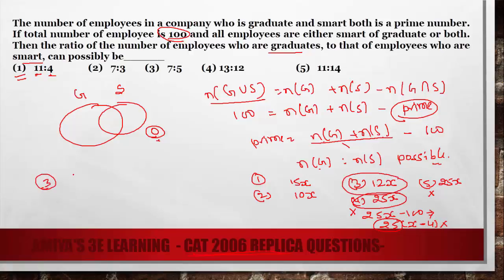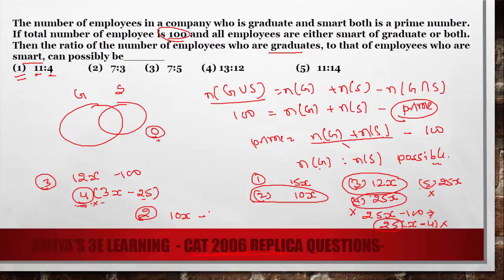Checking option number 3: ng plus ns minus 100 with the 12x condition. Taking 4 as common gives 4(3x minus 25). This cannot be prime because the product of a composite factor is always composite. So option number 3 is out. Similarly for option number 2: 10x minus 100 equals 10(x minus 10) — again a composite number times another number cannot be prime. So option 2 is also eliminated. Options 2, 3, 4, and 5 are all out.